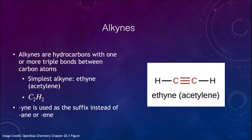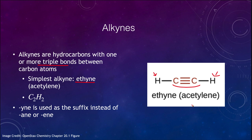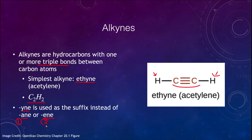The last hydrocarbon type are the alkynes. Alkanes had single bonds, alkenes had double bonds, and alkynes are the ones with triple bonds — at least one triple bond between carbon atoms. The simplest is ethyne, with just two carbon atoms and one hydrogen atom on each end, giving C2H2. For naming: '-ane' means single bonds, '-ene' means at least one double bond, and '-yne' means at least one triple bond.